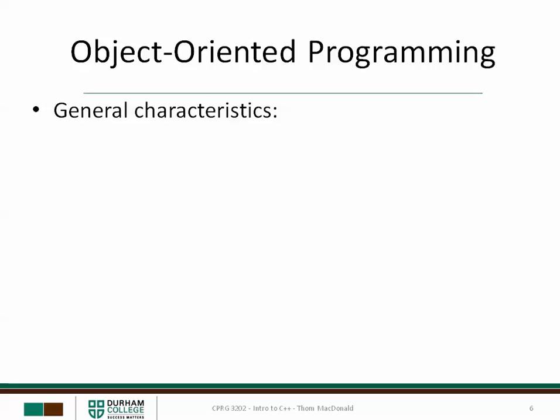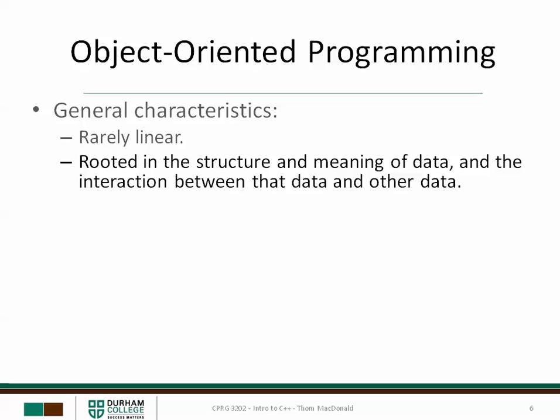Let's look at some general characteristics of object-oriented programs. Typically, an object-oriented program isn't as linear as a procedural program. For example, a program based on a Windows form with buttons and text boxes is waiting for things to happen — it doesn't simply start, load into memory, do some stuff, and then unload from memory. While the program is running, it can take many different paths. In object-oriented programming, there's a great deal more focus on the structure and meaning of data, as well as how that data will interact with other data, so there's less focus on a simple step-by-step procedure.